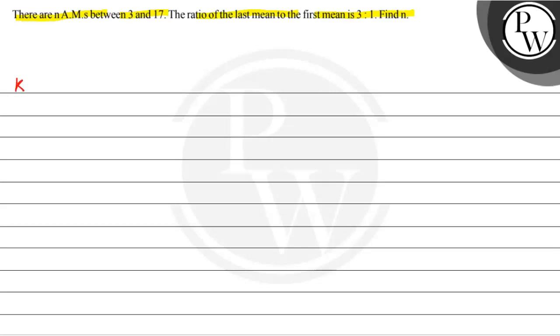Before we start the solution, let's discuss a key concept. If the series is an AP, the nth term formula is A plus N minus 1 into D, where A is the first term, D is the common difference, and N is the number of terms.